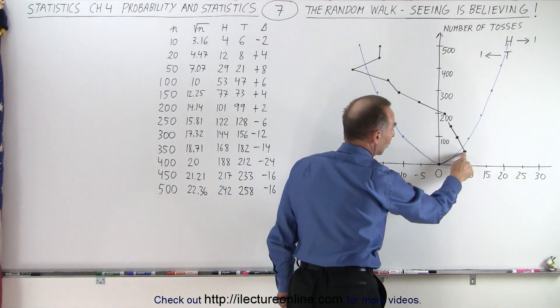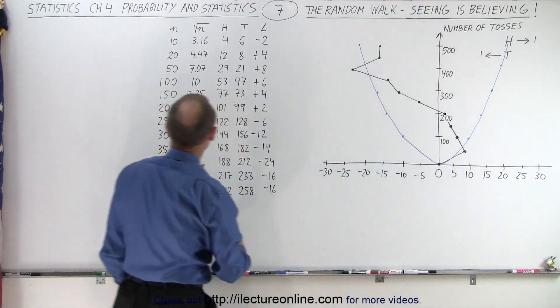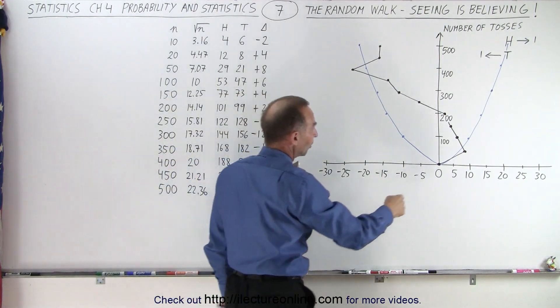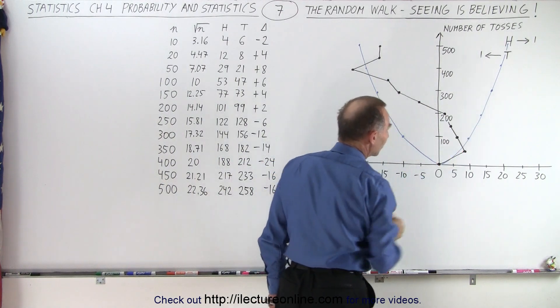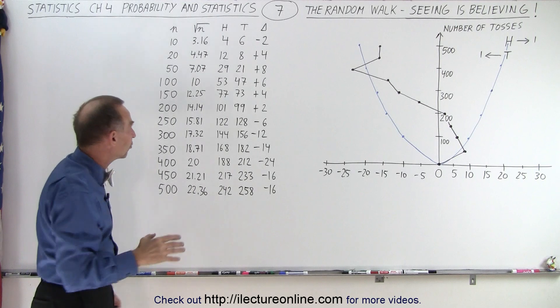So after 50 tosses I was over here and it looked like the theory seems to be correct. After 100 tosses I had 53 heads and 47 tails, so I was still 6 units to the right, so it seemed to be following pretty well what it was supposed to, but then things seemed to go kind of strangely.